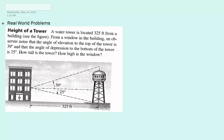For this problem, we're going to use our knowledge of trigonometry and apply it to a real-world problem. A water tower is located 325 feet from a building. From a window in the building, an observer notes that the angle of elevation to the top of the tower is 39 degrees, and that the angle of depression to the bottom of the tower is 25 degrees. How tall is the tower, and how high is the window? If we look at the figure, we'll see that we know our base, we know our two angles, and we can see that our two angles form two right triangles, and that the base is the same for each triangle.